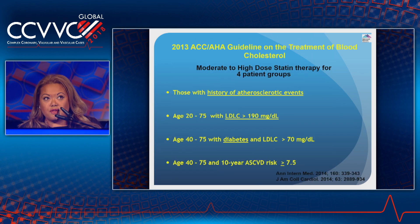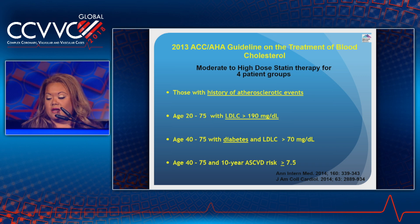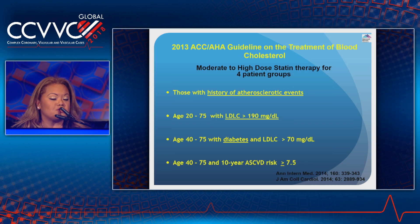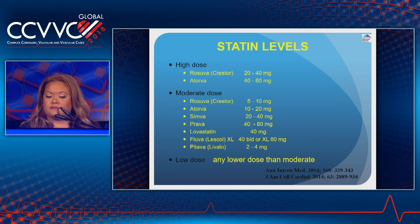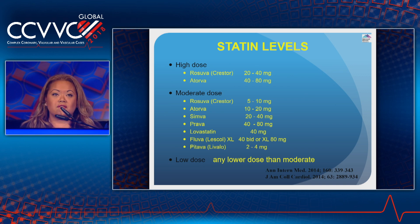According to the 2013 ACC/AHA guideline on the treatment of blood cholesterol, four specific patient groups were identified for moderate to high dose statin therapy: those with a history of atherosclerotic events; ages 20 to 75 with an LDL-C greater than 190; ages 40 to 75 with diabetes and LDL-C greater than 70; and ages 40 to 75 with a 10-year atherosclerotic cardiovascular disease risk greater than or equal to 7.5%. This slide shows the low, moderate, and high dose levels of the various statins.